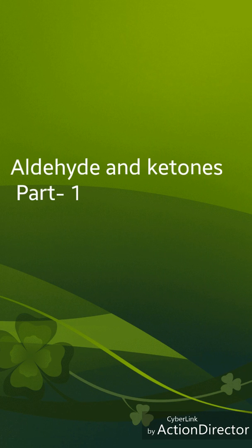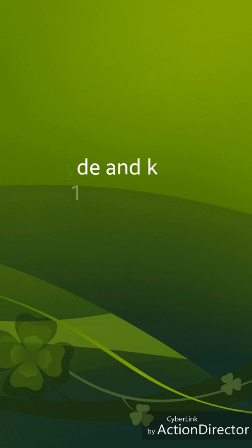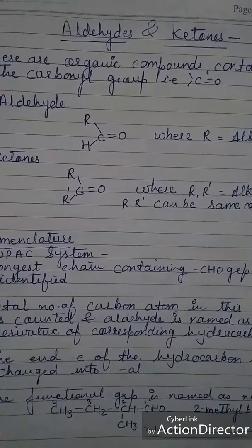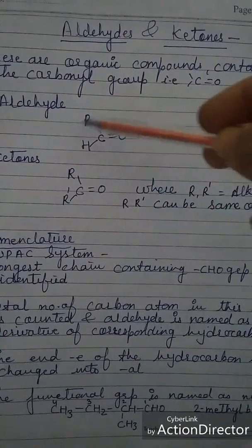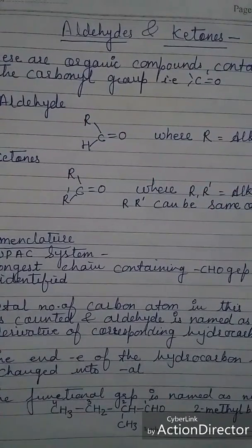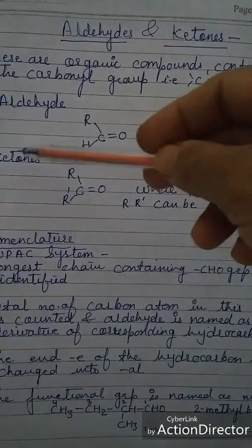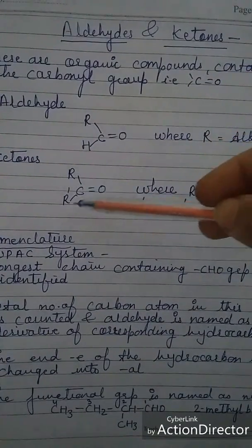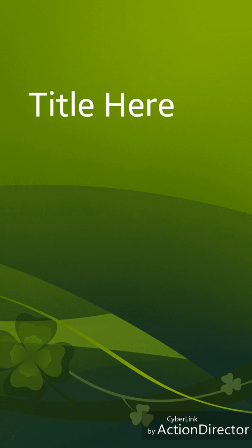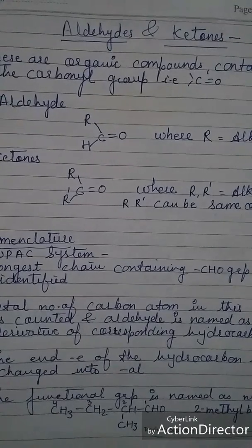Today we will start with aldehydes and ketones. These are organic compounds which contain a carbonyl group. Aldehyde will be represented as RCHO where R can be an alkyl or aryl group. Ketones are represented as RCOR', where R and R' can be the same or different, and they can be alkyl or aryl groups.